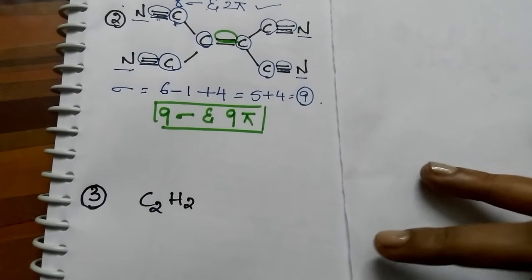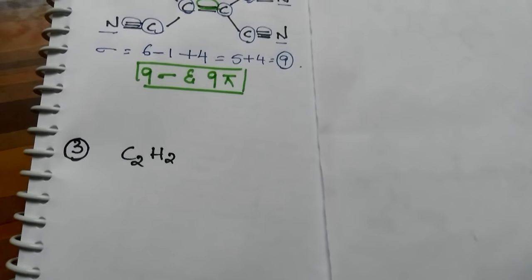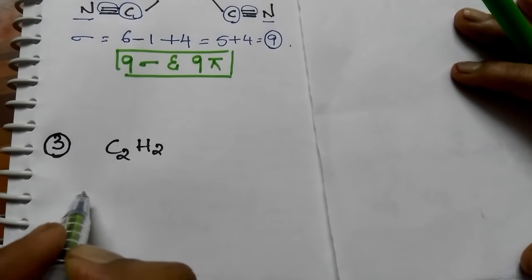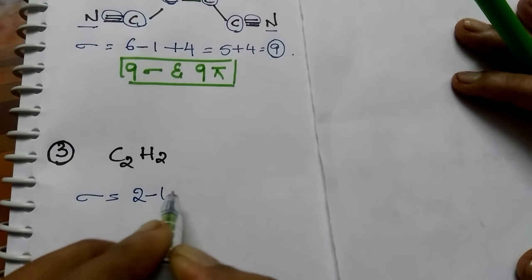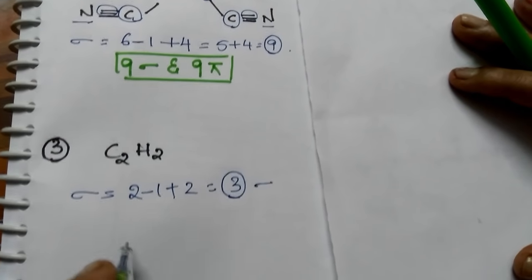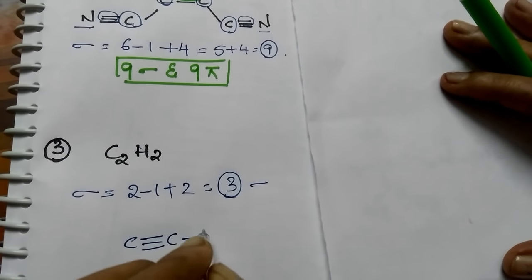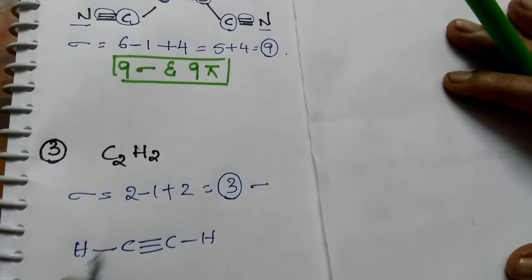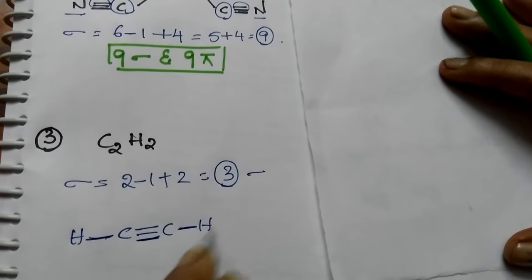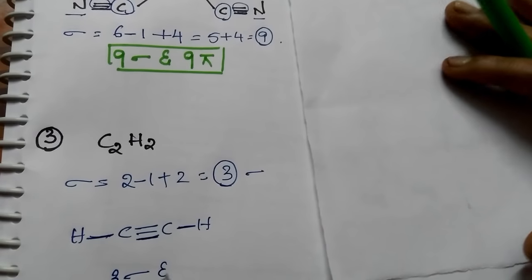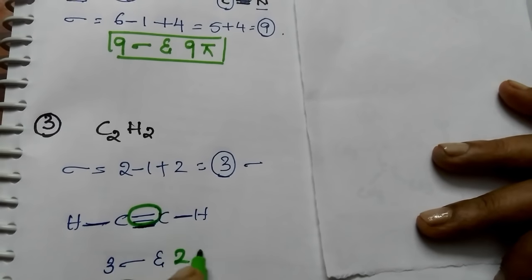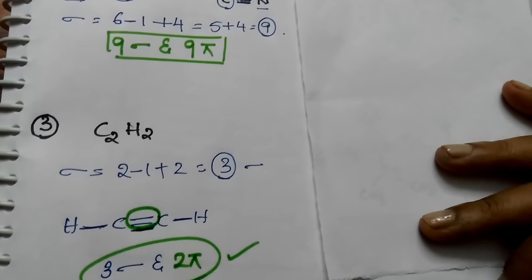Example 3: C2H2. Total number of carbons are 2. So 2 minus 1 plus other atoms is 2 — total 3 sigma bonds. Counting manually: 1, 2, 3 — that's 3 sigmas. And how many pi bonds are there? 2 pi bonds are there. So 3 sigma and 2 pi.